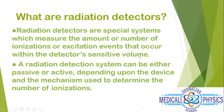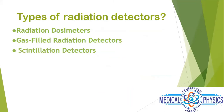What are radiation detectors? Radiation detectors are special systems which measure the amount or number of ionization and excitation events that occur within the detector's sensitive volume. A radiation detector system can be either passive or active depending on the device and mechanism used. Passive detectors trap ions somewhere and we either heat them or process them later for counting; active detectors give results immediately.